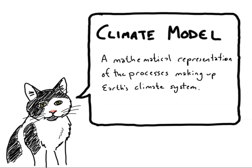A climate model is a mathematical representation of the processes making up the Earth's climate system. Climatologists rely heavily on models since we can't easily, or ethically, do experiments on the entire climate system. But if we have a reliable model, we can use it to test out what would happen if we made changes to the climate system.